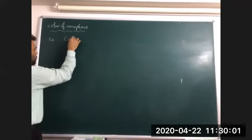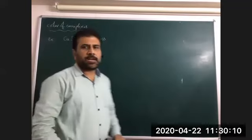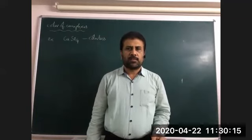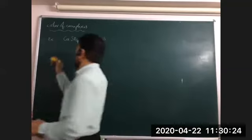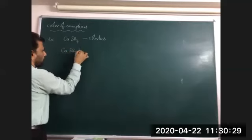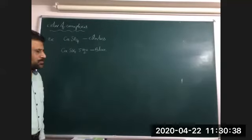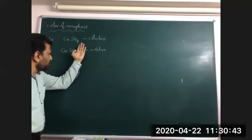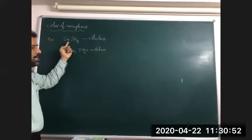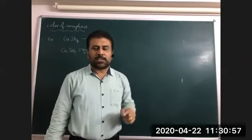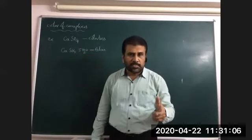Consider CuSO₄ — anhydrous copper sulfate is colorless. This was used in detection of water molecules: if water comes in contact with CuSO₄, it becomes blue — that is called blue vitriol. So anhydrous CuSO₄ is colorless but CuSO₄·5H₂O has blue color. This is because of water molecules. If water molecules are removed by calcination, it forms anhydrous copper sulfate which is colorless. There is something being contributed by the water molecule.